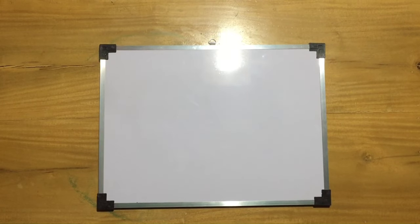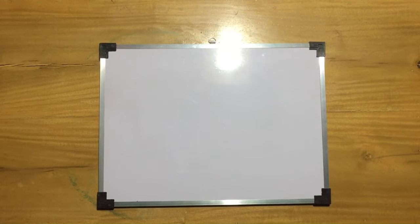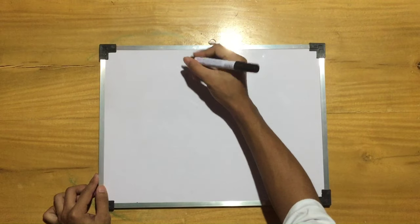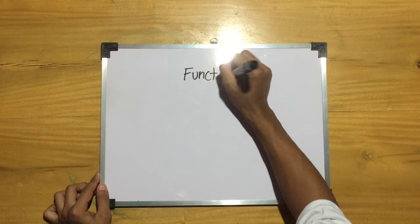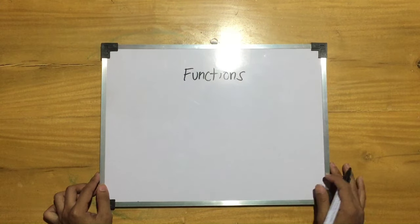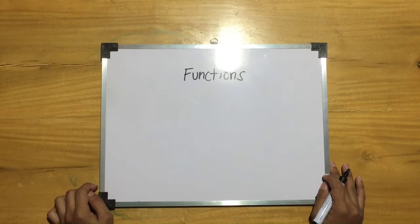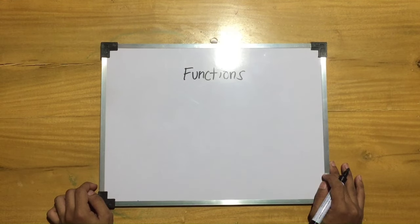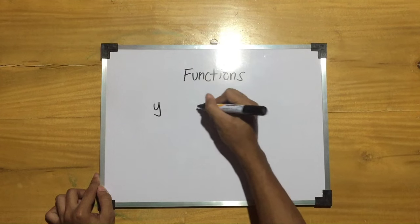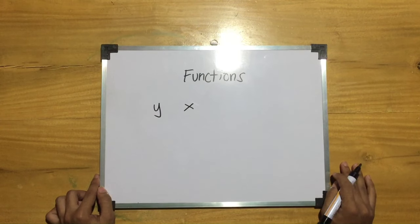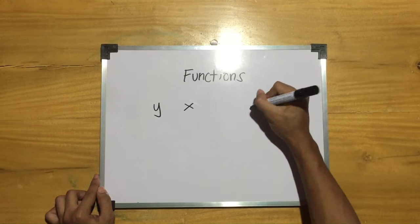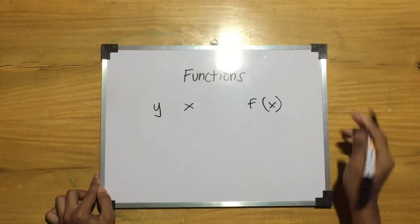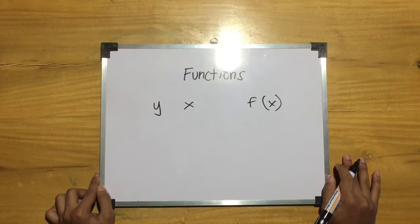First, let us discuss and get to know functions. A function is a relationship between a set of independent inputs and a set of dependent outputs where exactly one output is related to each input. We can assume that y is a function of x, and it is normal to call a function either f of x, written in symbol as y equals f of x.